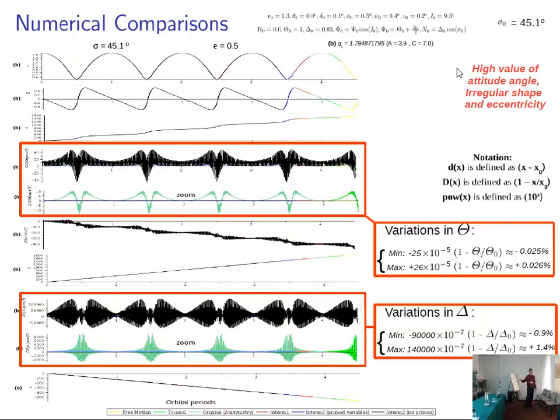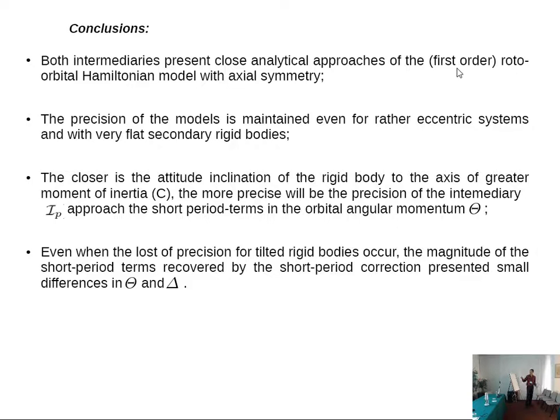Okay, my conclusions are, both intermediaries present close analytic approaches of the first order of roto-orbital model with axial symmetry. What was our goal in doing this study. Okay, the precision of these models, they are inside of our ideas about what is good precision, but we need to perform more simulations. To test, for example, ranges of masses, ranges of masses and ranges of the semi-major axis of the orbit.